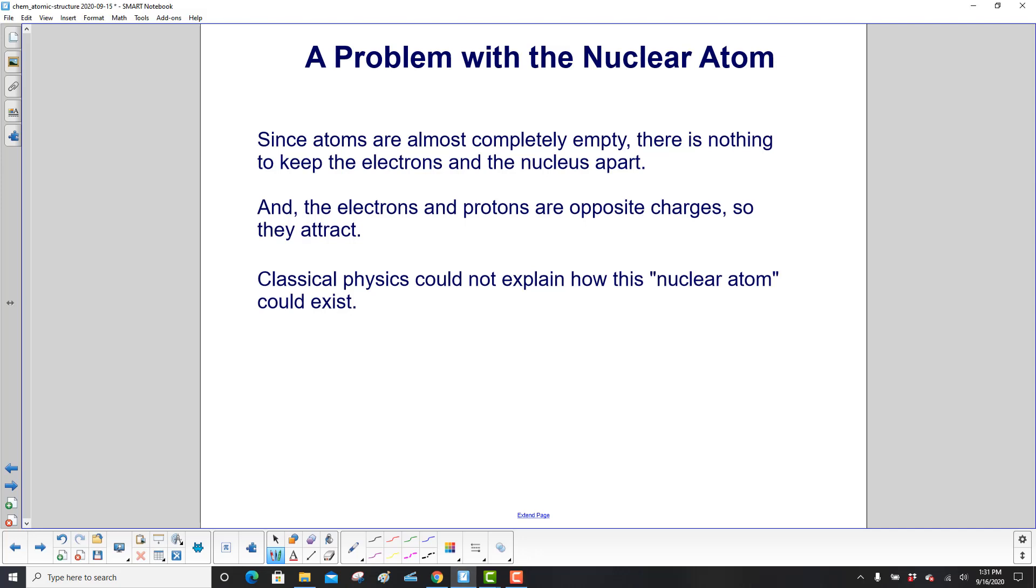Since atoms are almost completely empty, there's nothing to keep the electrons and the nucleus apart. And the electrons and protons are opposite charges, so they attract. Classical physics could not explain how this nuclear atom could ever exist.